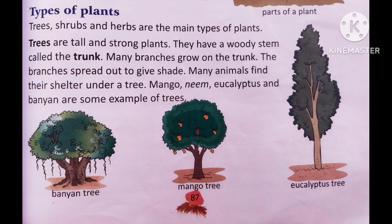Now we will study about different types of plants. Trees, shrubs, and herbs are the main types. Trees are tall and strong plants with a woody stem called the trunk. Many branches grow on the trunk and spread out to give shade. Many animals find shelter under a tree. Mango, neem, eucalyptus, and banyan are some examples of trees.